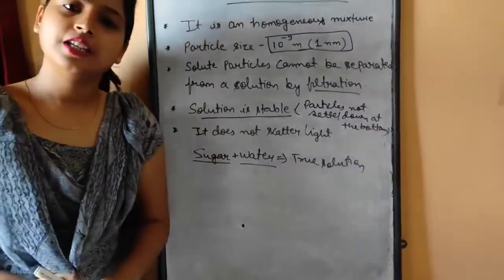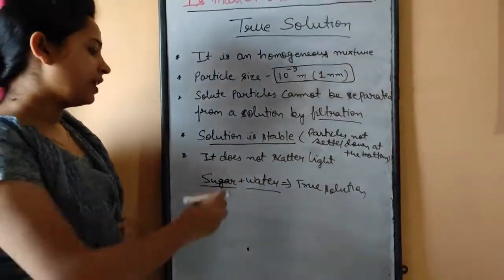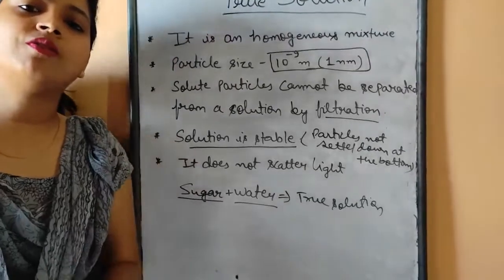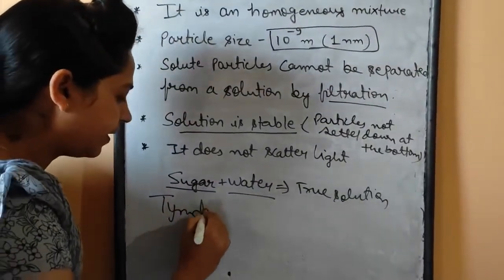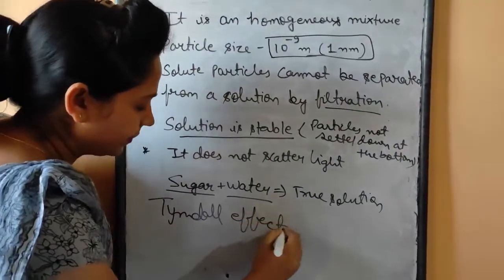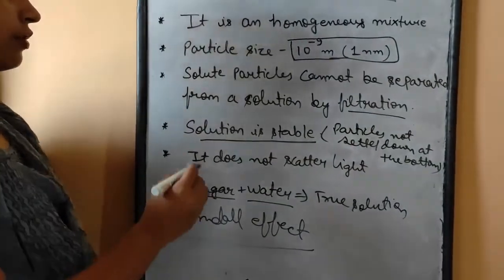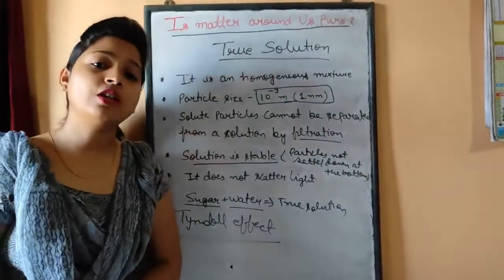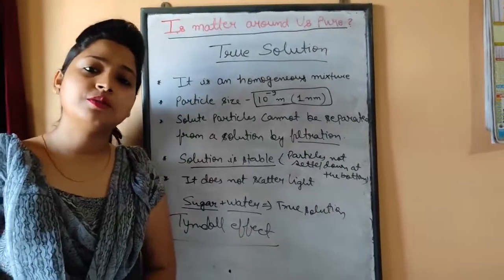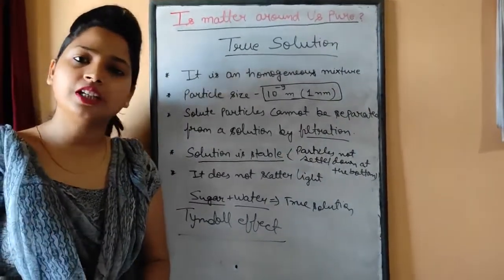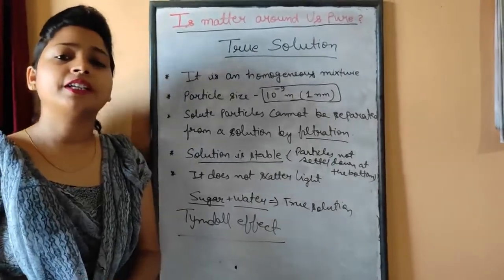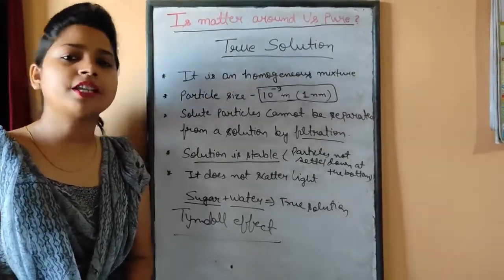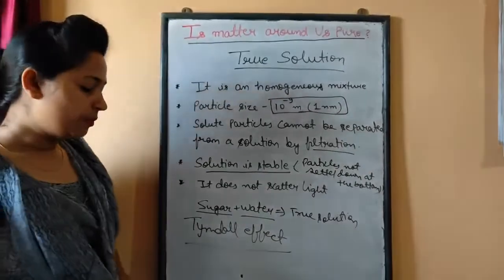True solution is stable, and it does not scatter the beam of light. Scattering of a beam of light is called the Tyndall effect, which we will read further. True solution does not show the Tyndall effect. So the properties of true solution are: homogeneous mixture, does not show Tyndall effect, is stable, particle size is 10 to the power minus 9 meter or 1 nanometer, and solute particles are not separated by normal filtration.